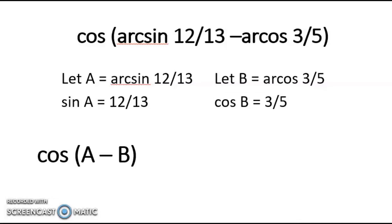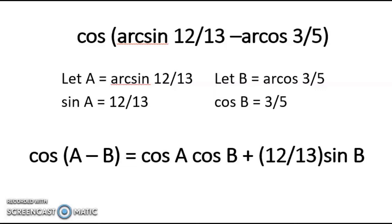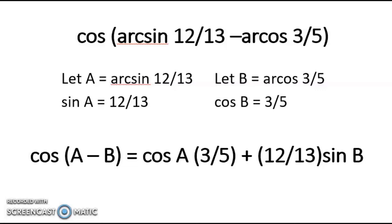And this is the difference identity for cosine. The difference identity for cosine is: cosine of A minus B equals cosine A times cosine B plus sine A times sine B. We know that sine A equals 12 over 13, so we are going to substitute it. And cosine B equals 3 over 5.